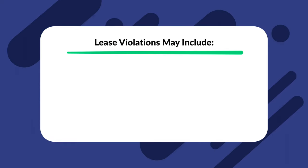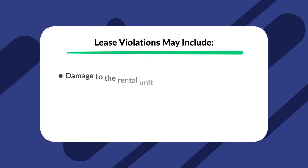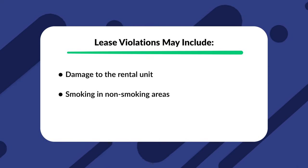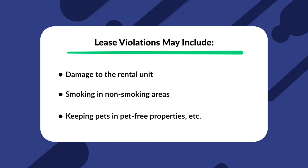The landlord is not legally obligated to allow the tenant to resolve the violation before presenting them with the notice. Lease violations may include damage to the rental unit, smoking in non-smoking areas, and keeping pets in pet-free properties. If the tenant remains inside the rental unit by the end of the 30 days, then the landlord may continue with the eviction.